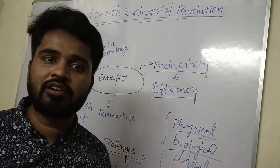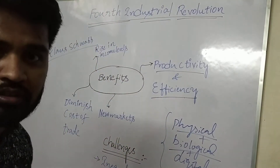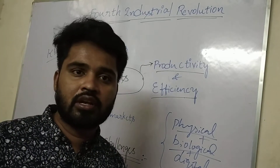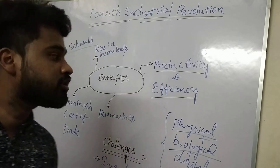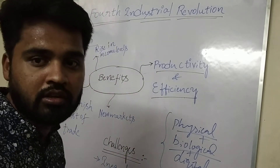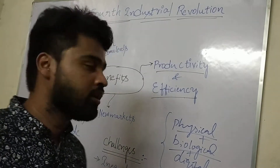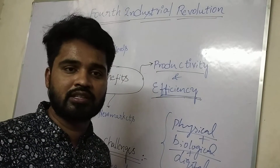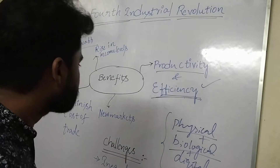Coming to the benefits of the Fourth Industrial Revolution — first, there is increased automation, which will obviously increase production. Due to robotization, efficiency in the production process will also increase. This is the first and foremost benefit.